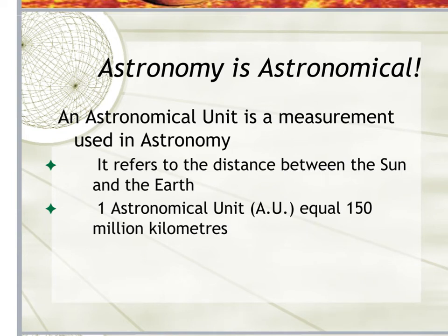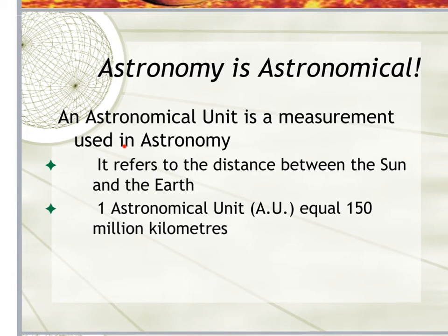All of the planets are very far away from the sun and very far from each other, especially those outer planets. Because of this distance, we use different units when talking about distances in space. On Earth we use kilometers or meters, but things are so far in space that it is ridiculous to say 500 million kilometers. So we use something called the astronomical unit, or the AU. The astronomical unit is basically the distance between the sun and the Earth, which is equal to 150 million kilometers.